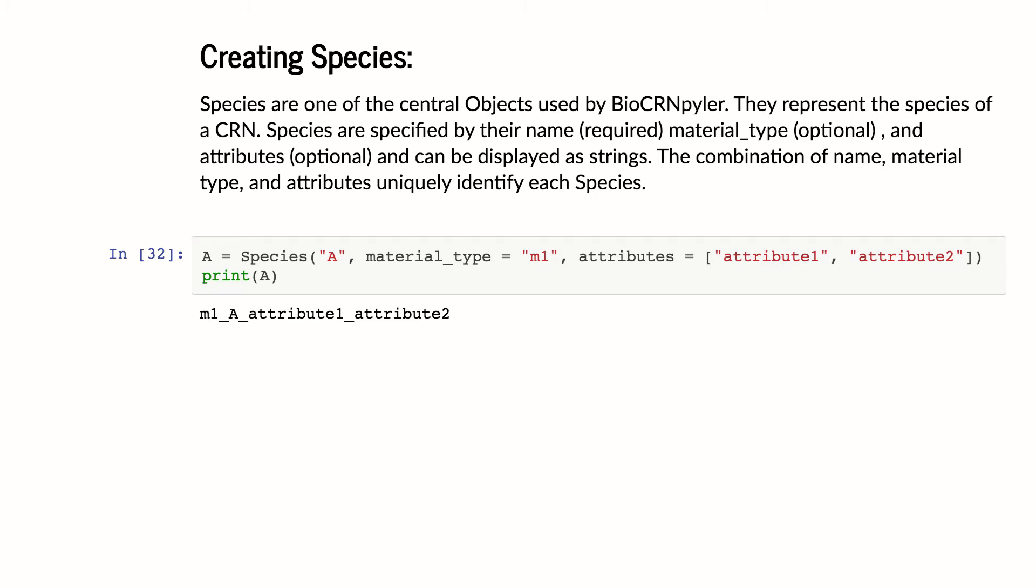And the properties of species in BioCompiler are their name. In this case, it's called A. It can have a material type and it can have a list of attributes. And most things in BioCompiler you can print. If you want to ever see what something is, you just say print it and it will try to show you some representation of that thing so you can easily get output of the models you're making.